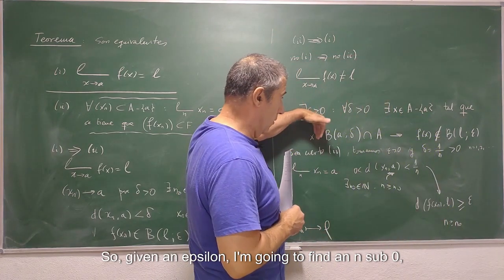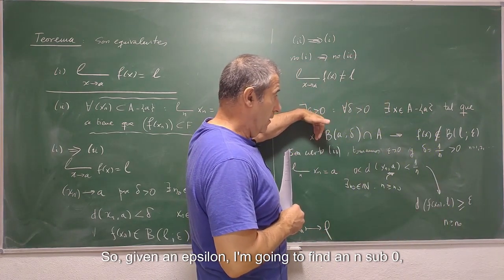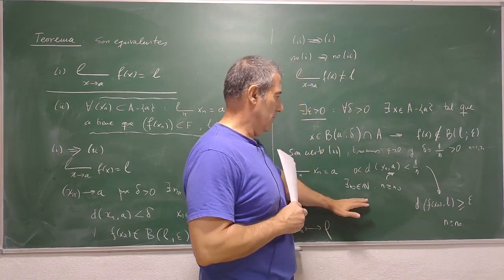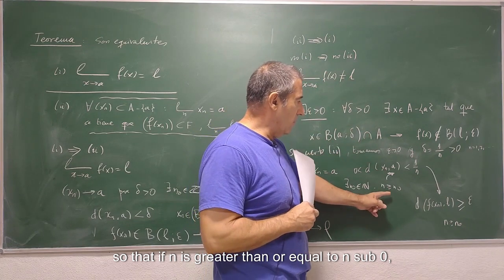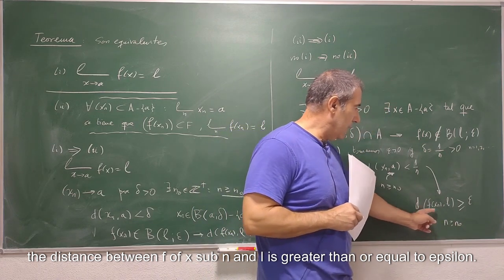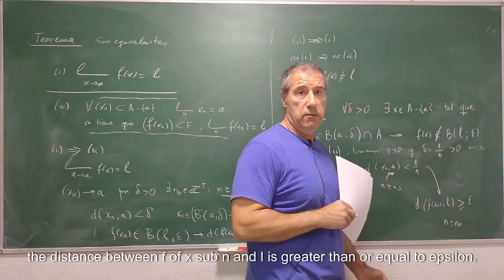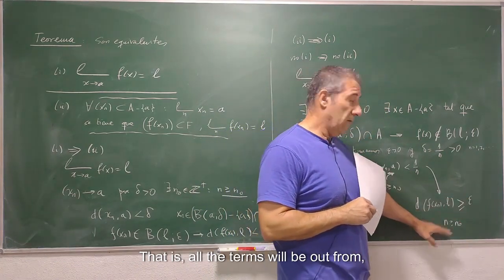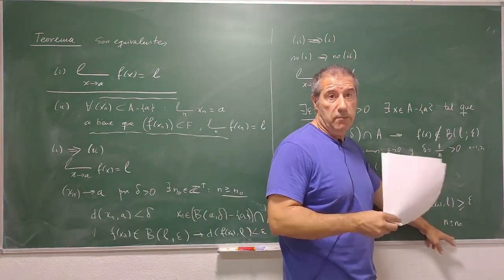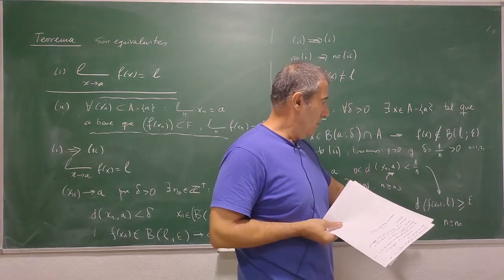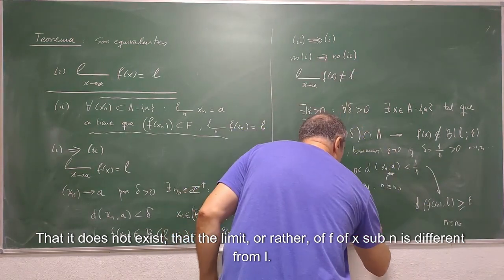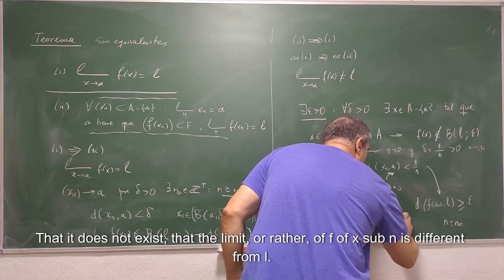So, given an epsilon, I'm going to find an n sub 0 so that if n is greater than or equal to n sub 0, the distance between f of x sub n and L is greater than or equal to epsilon. That is, all the terms will be out from, for example, from n sub 0 plus 1, from that place, what does it mean then? That it does not exist, that the limit, or rather, of f of x sub n is different from L.